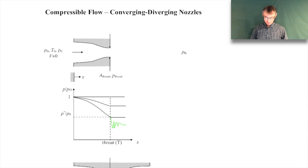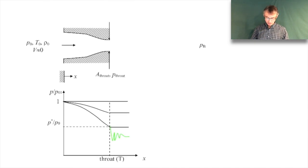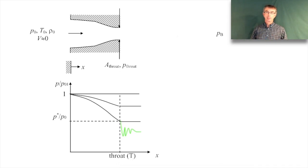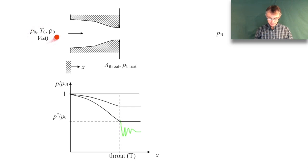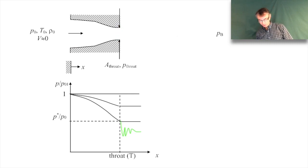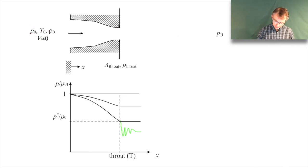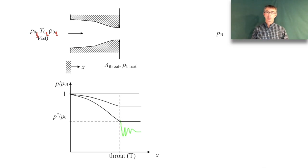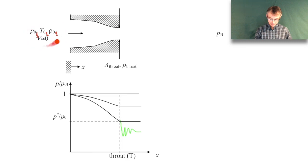As a reminder from the last lecture, here's just flow through a converging nozzle. We start from stagnation conditions upstream, with the back pressure P_B downstream and a throat at the minimum area. We're going to plot the pressure normalized by the upstream stagnation pressure P₀₁ as a function of position. When the back pressure equals P₀₁ there's no pressure gradient to push the fluid, so the pressure everywhere is just the stagnation pressure — nothing happens.